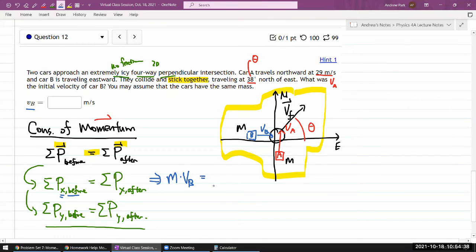That's equal to... I'll write the right-hand side after. Let me just do the before picture first. So the total y momentum before, only car A is moving in the y direction. So I'll say mass of A times its speed or velocity. It's going in the plus y direction, so that's the total y momentum before.